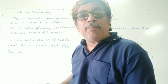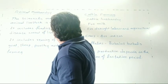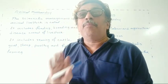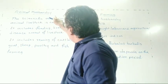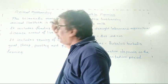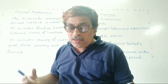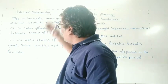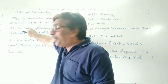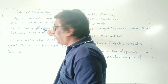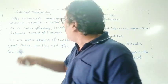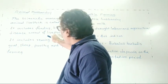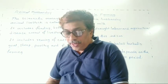What do you mean by animal husbandry? The scientific management of animal livestock is called animal husbandry. Livestock means farm animals. Animal husbandry includes feeding — giving food to animals — breeding, which means raising their numbers, and disease control of livestock.